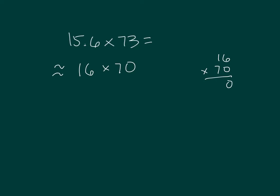7 times 6 is 42, 2, regroup of 4. 7 times 1 is 7, plus 4 is 11. Our estimate is 1,120.